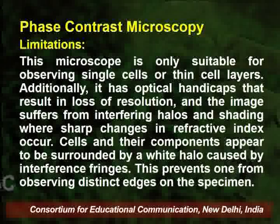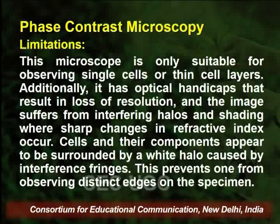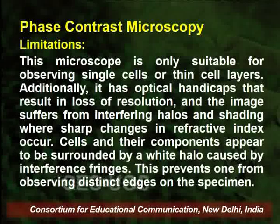As far as the limitations of phase contrast microscopy are concerned, this microscope is only suitable for observing single cells or thin cell layers. Additionally, it has optical handicaps that result in loss of resolution, and the image suffers from interfering halos and shading where sharp changes in refractive index occur. Cells and their components appear to be surrounded by a white halo caused by interference fringes, which prevents observing distinct edges of the specimen. To overcome these limitations, we can use different variations of the light microscope.